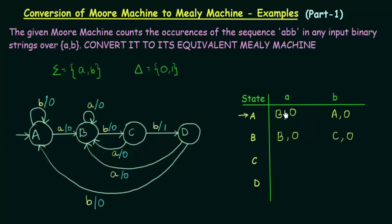Come to state C. C on input small a goes to B giving output 0. On small b, C goes to state D, and the output it gives is 1.